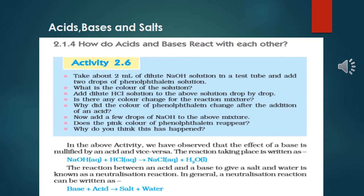Add two drops of phenolphthalein solution. Remember, phenolphthalein is an indicator — it is a synthetic indicator. Add phenolphthalein solution, about two drops, with the 2 ml of dilute sodium hydroxide solution. Then observe the color of the solution. Now add HCl solution to the above solution drop by drop.